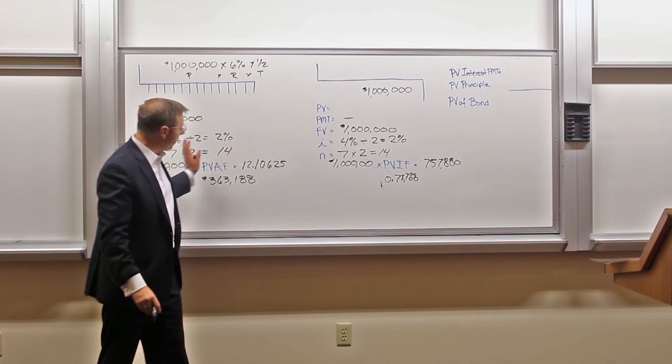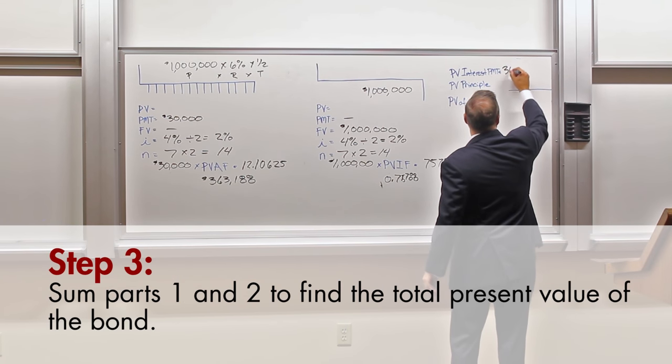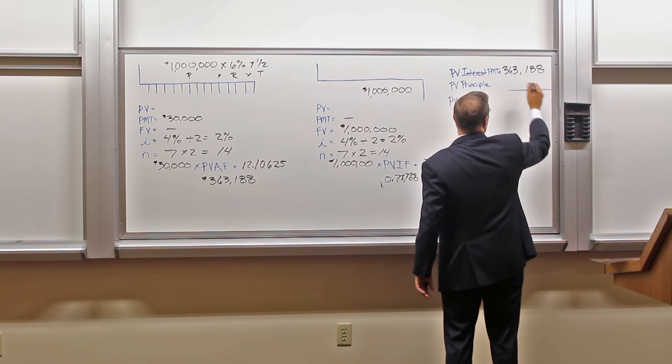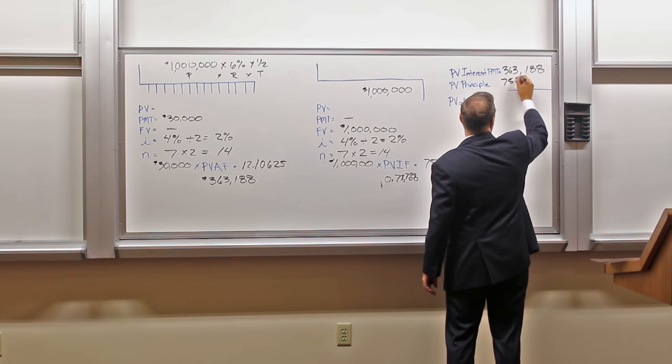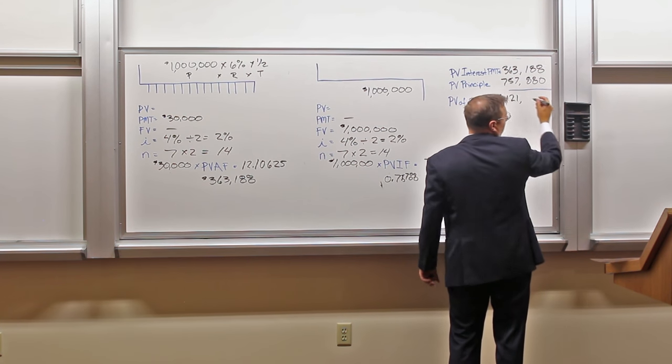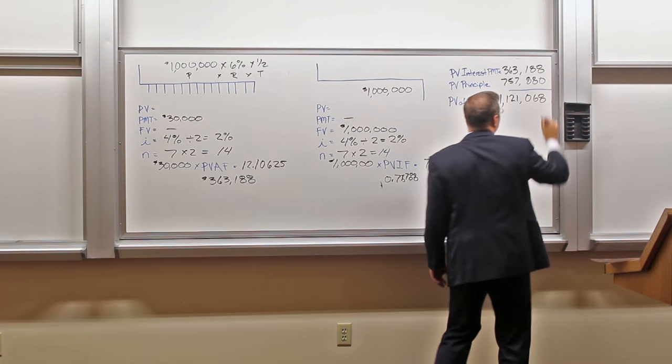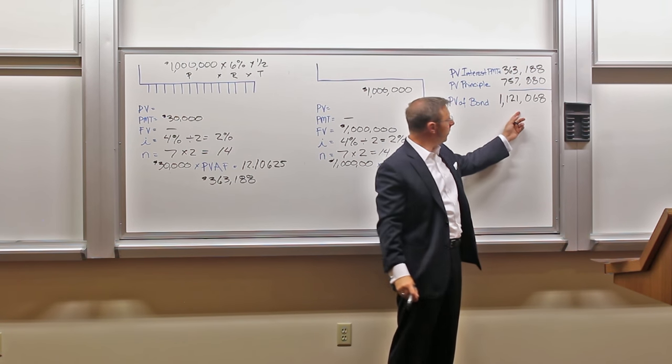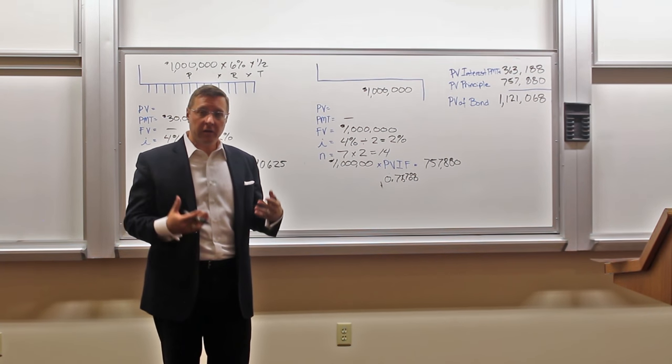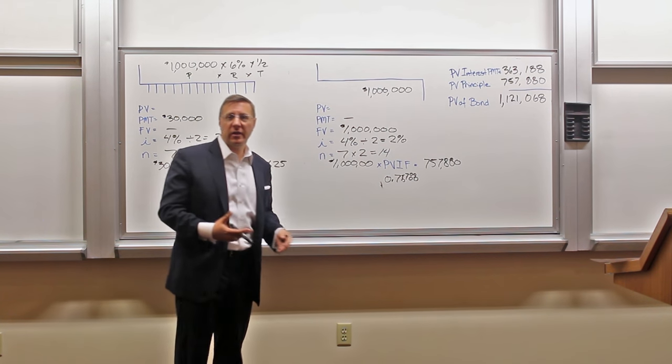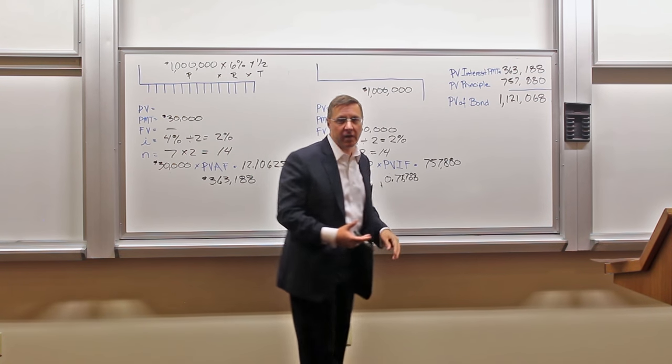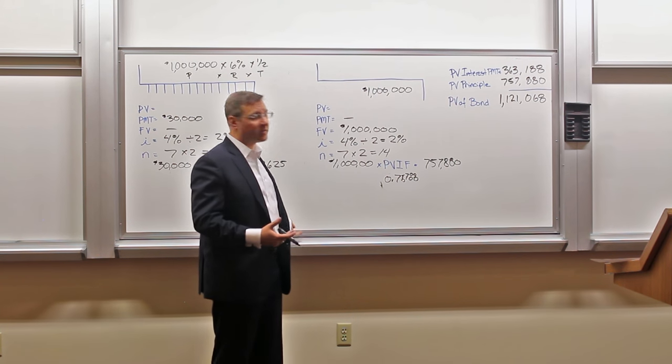To get the total present value, we add up the two pieces. The present value of the interest, $363,188, the present value of the principal, $757,880, and the total, $1,121,068. So the extra $121,068, there's some rounding in there, but that is a premium on the bond. They are going to get more cash than they're going to have to pay out. So what we need to do is, over the course of time, work that premium down so that the liability on their balance sheet is a million dollars when it comes time to pay off.